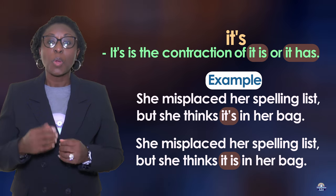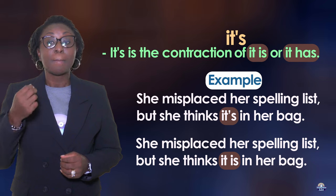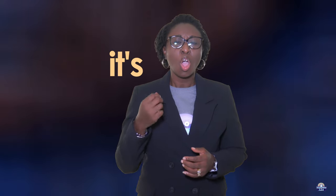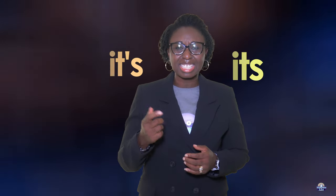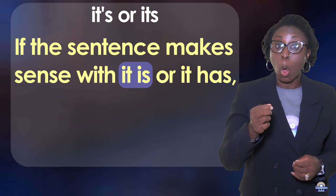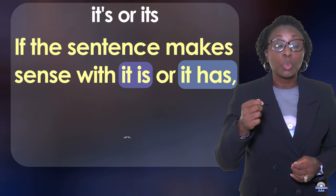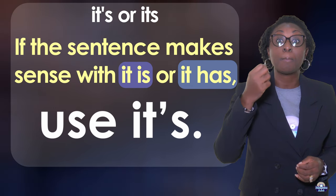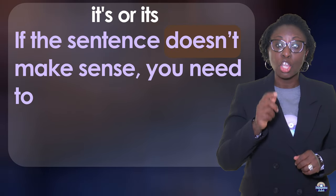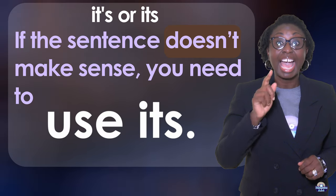Here we can see that 'it is' makes sense, so it is correct. If you are trying to figure out whether to write 'it's' (I-T-apostrophe-S) or 'its' (I-T-S): if the sentence makes sense with 'it is' or 'it has', use 'it's' with an apostrophe. If the sentence doesn't make sense, use 'its' — I-T-S.